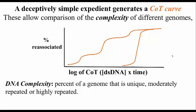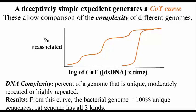CoT curves permit comparison of the complexity of different genomes on the same graph, placing unique sequence DNA from any source at the right with a high CoT value, and progressively more repetitious DNA lies to the left of the slow annealing DNA sequences. So from this curve, you can say that the bacterial genome is 100% unique sequence, while the rat genome has all three classes of DNA: unique, moderately repeated, and highly repeated.